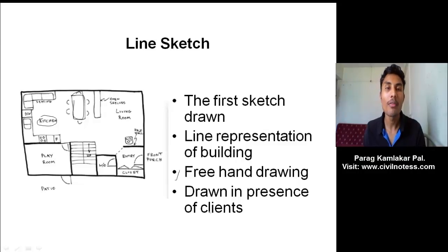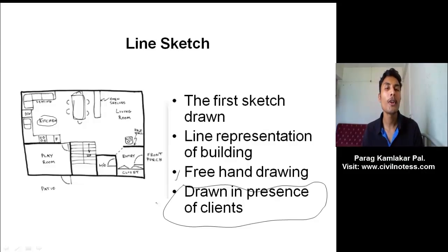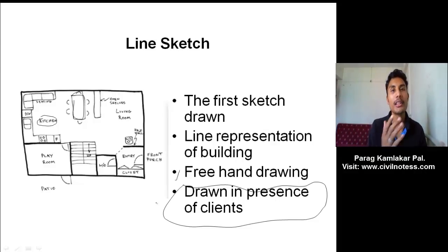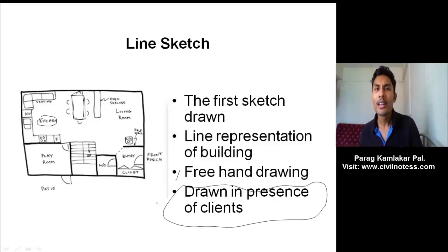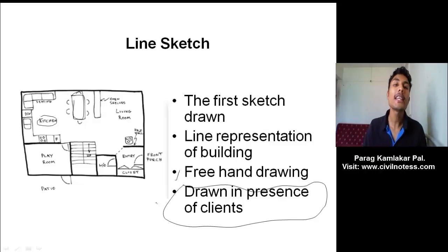The drawing is drawn in the presence of the client — that is one of the most important parameters of the line sketch. Why? Because during sketching in front of the client, the client can suggest changes. If the client wants to change anything, we can take the idea from there — what they exactly want. For example, they may say they want the kitchen in a different direction. These things happen with the client each and every time, because every client is very sensitive about the construction of their home. So the line sketch is one of the most important parameters to handle all these changes.